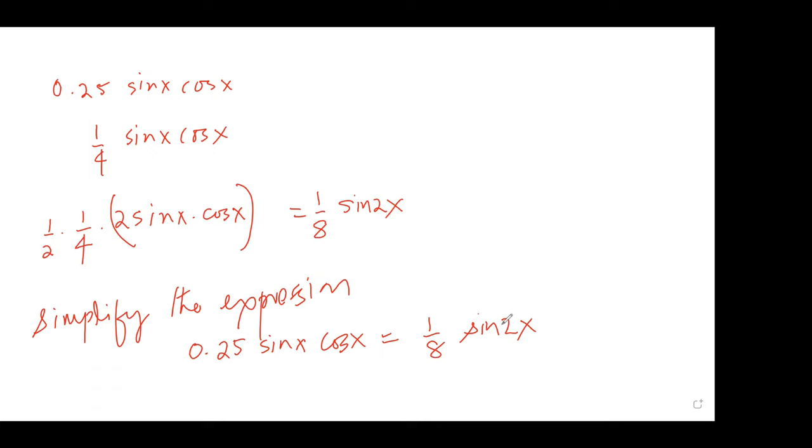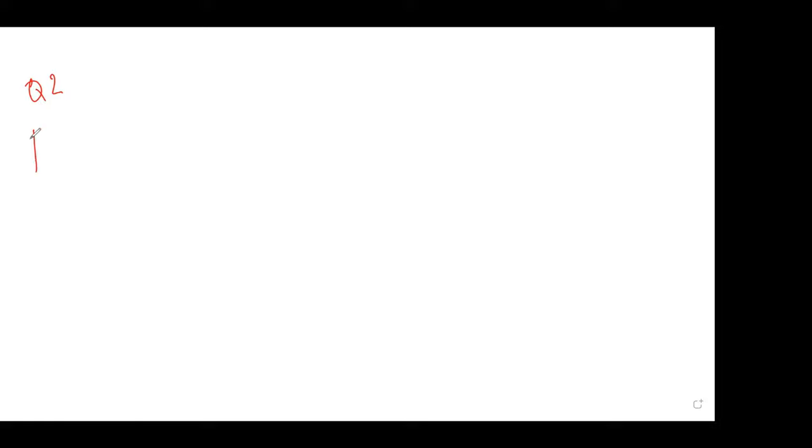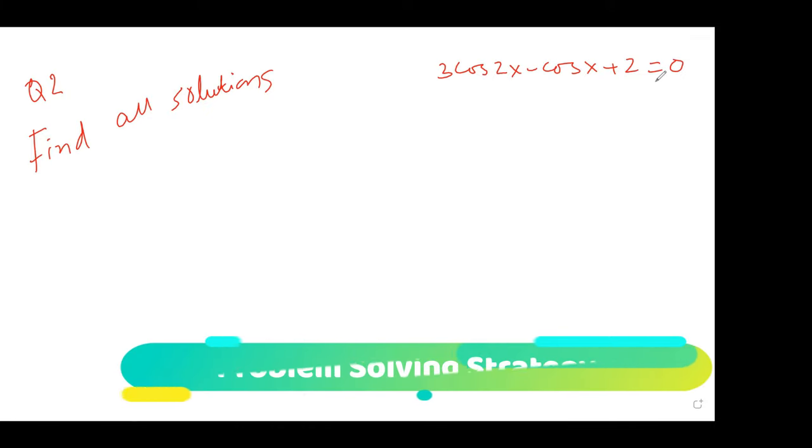Yeah. So this one says find all solutions. And the equation is 3 cos 2x minus cos... Okay, let me clear the screen. So question number 2 is find all solutions. What is the question? 3 cos 2x minus cos x plus 2 equals 0. That is the question, correct?